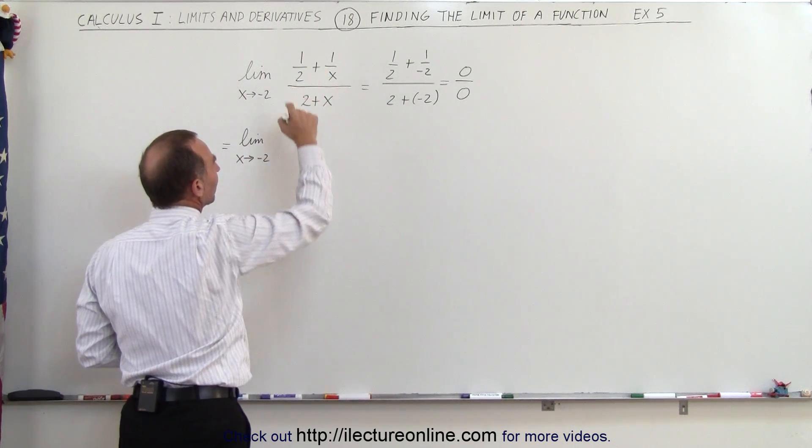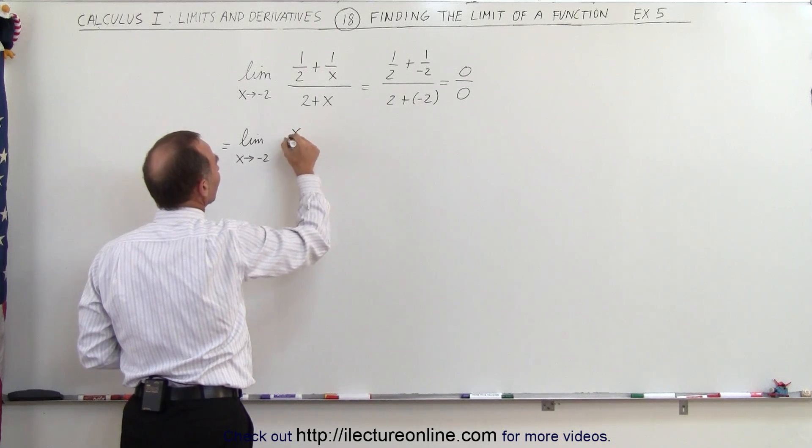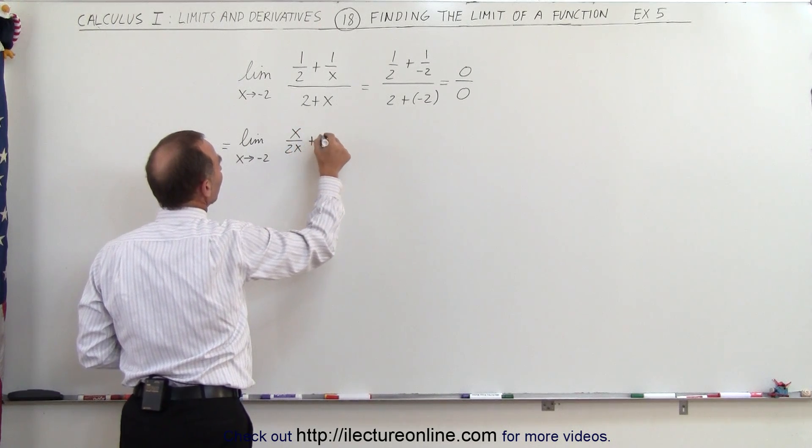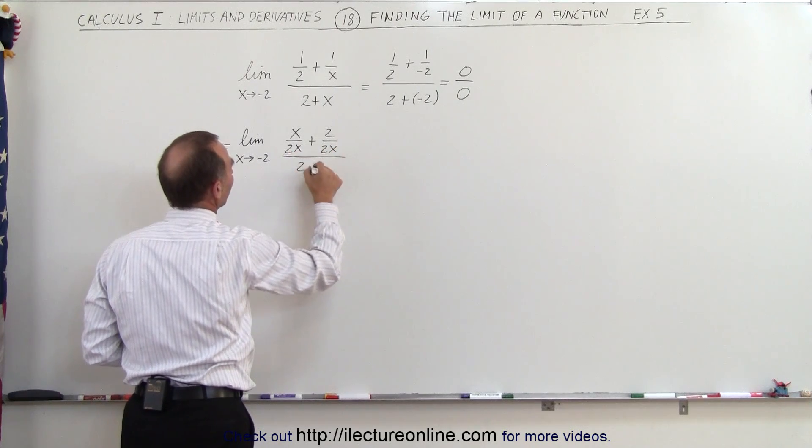And let's combine the numerator. Let's go ahead and find the common denominator which is 2x so this becomes x divided by 2x plus 2 divided by 2x all divided by 2 plus x.